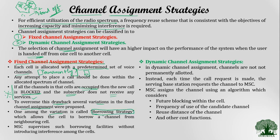In order to overcome these drawbacks, several variations have been proposed, and one important variation is the borrowing strategy. Just as in real life when we run out of money we borrow from friends or relatives, similarly when a particular cell is running out of assigned spectrum, it can borrow a certain amount of frequencies from a neighboring cell. While borrowing, the MSC — mobile switching center — will supervise the borrowing process to ensure no interference is introduced among the channels.